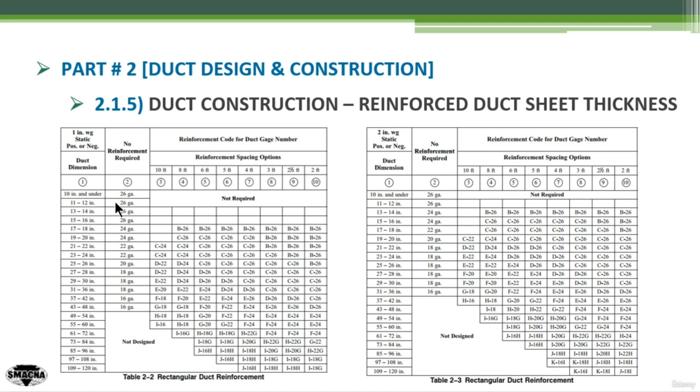I can use 24 gauge sheet metal thickness for the 20 inch. For the 12 inch, I can use 26 gauge if required. There is no reinforcement required in this case.